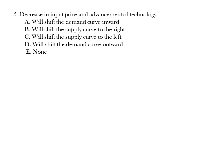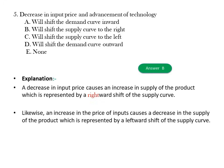Question five: Decreasing input price and the advancement of technology will: A) Shift the demand curve inward, B) Shift the supply curve to the right, C) Shift the supply curve to the left, D) Shift the demand curve outwards, E) None. The answer is B. Explanation: A decrease in input price causes an increase in supply, represented by a rightward shift of the supply curve. Likewise, an increase in input prices causes a decrease in supply, represented by a leftward shift.